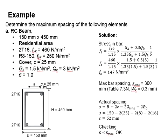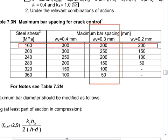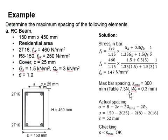Refer to Table 7.3N. Looking at Wk = 0.3 mm and stress lower than 160 N/mm², the maximum spacing smax = 300 mm.